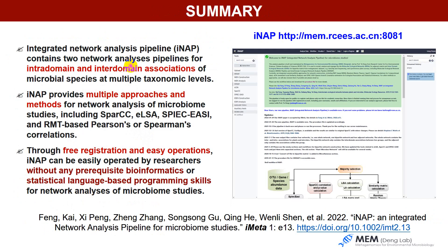In summary, INAP contains two network analysis modules for intradomaine and interdomaine associations of microbial species. INAP provides multiple approaches, including SparCC, ELSA, SpeakEasy, and RMT-based Pearson and Spearman correlations. Through free registration and easy operation, INAP can be easily used by researchers without any prerequisite bioinformatics or statistical programming skills for network analysis of microbial studies.